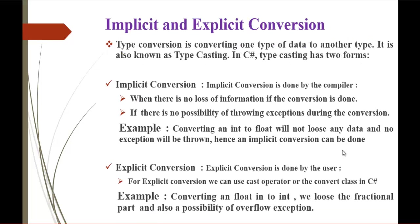Coming to implicit and explicit conversion: type conversion is converting one type of data to another type, and that is called typecasting. In C-Sharp, typecasting has two forms: implicit conversion and explicit conversion. Keep in mind, implicit conversion is done by the compiler, whereas explicit conversion is done by the user.